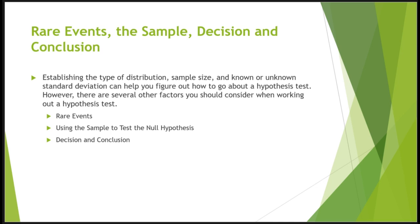We can also use a sample to test the null hypothesis. Use the sample data to calculate the actual probability of getting the test result, called the p-value. The p-value is the probability that, if the null hypothesis is true, results from another randomly selected sample will be as extreme or more extreme as the results from the given sample. A large p-value indicates we should not reject the null hypothesis. The smaller the p-value, the more unlikely the outcome and the stronger the evidence against the null hypothesis. You would draw a graph showing the p-value, which makes the hypothesis test easier to perform.